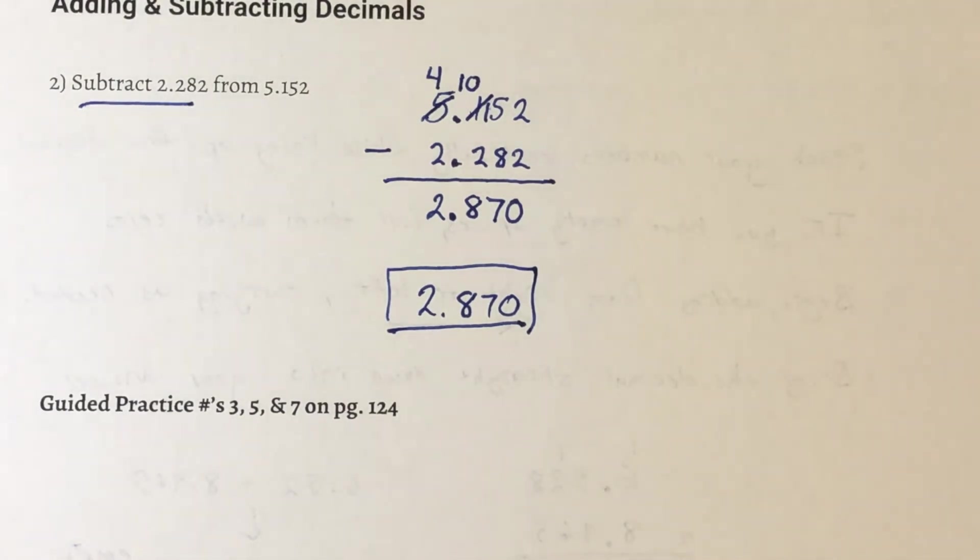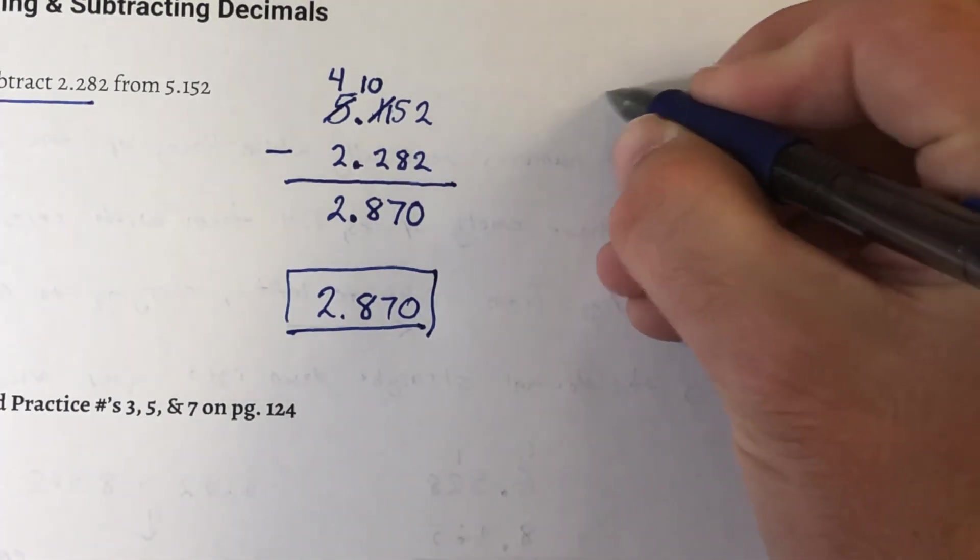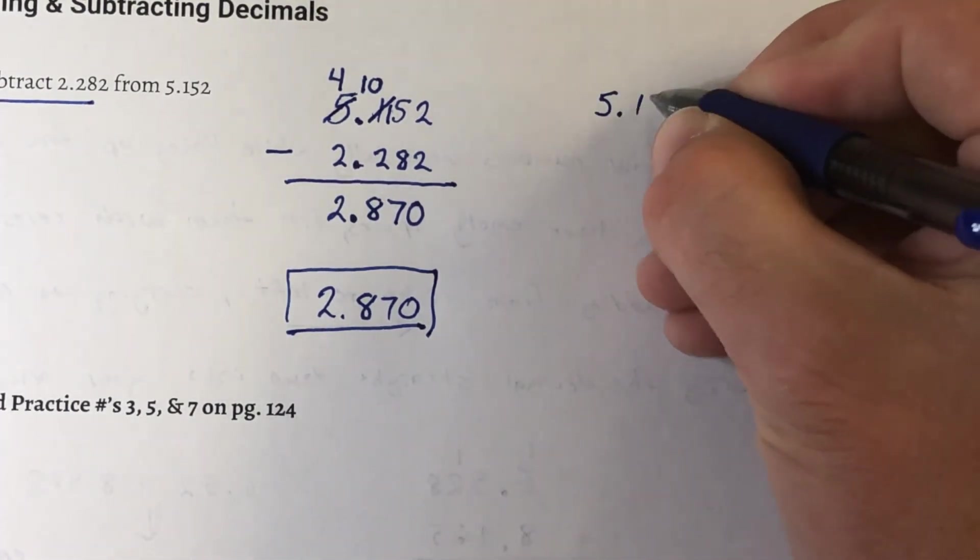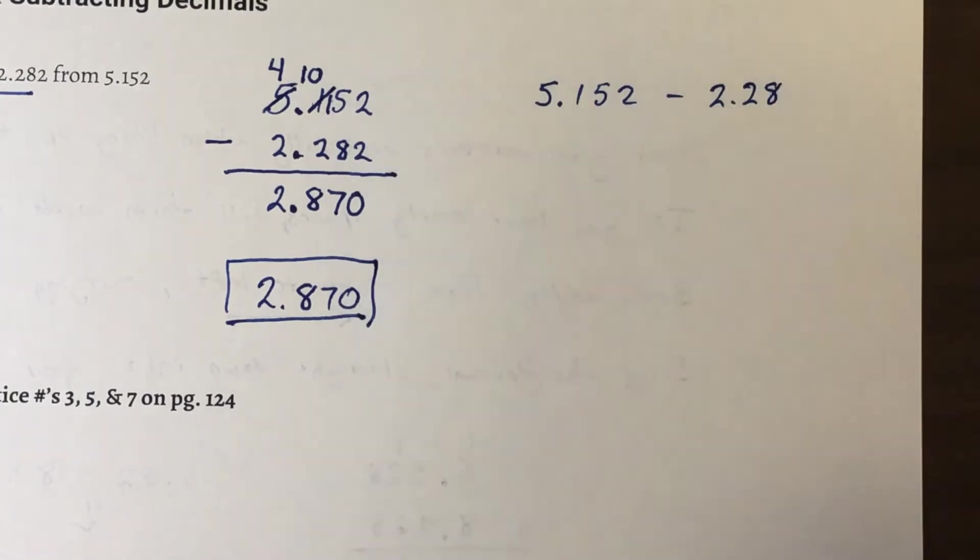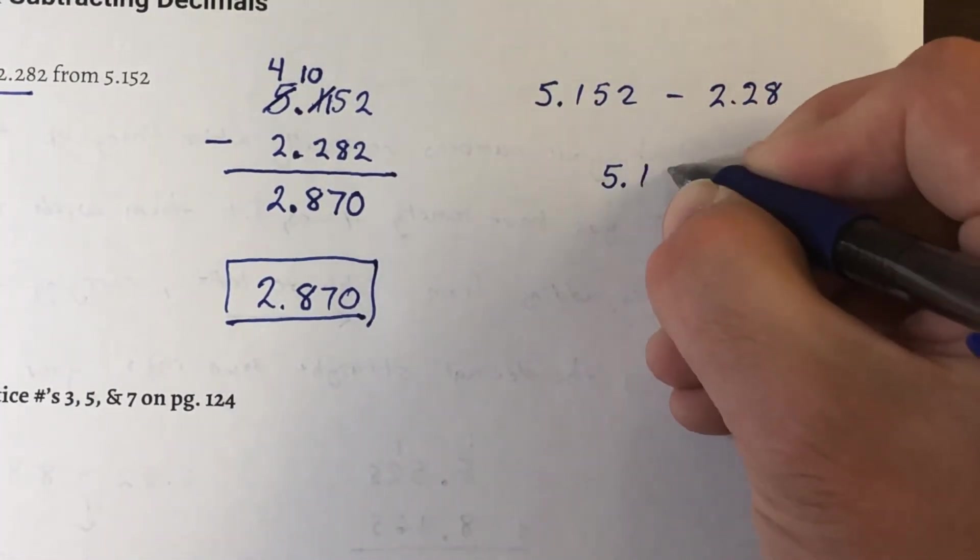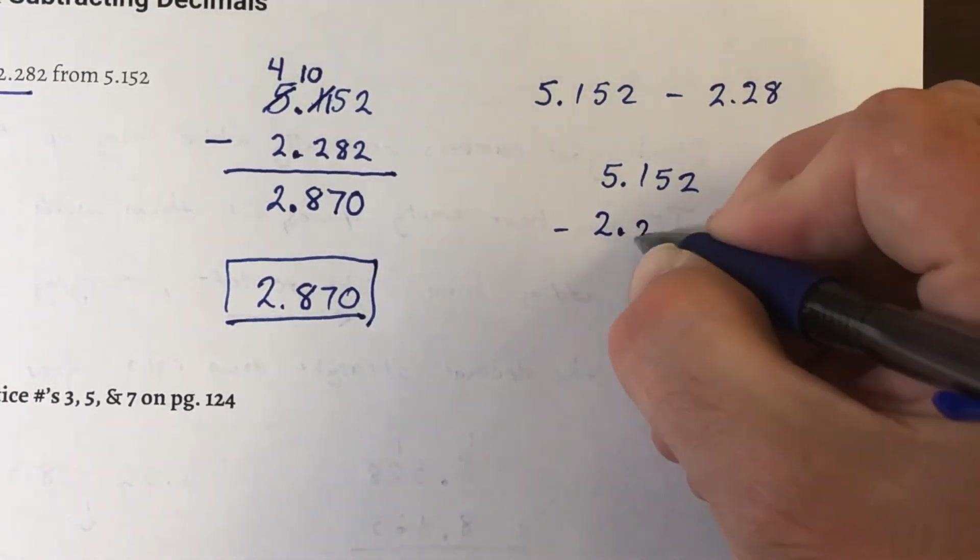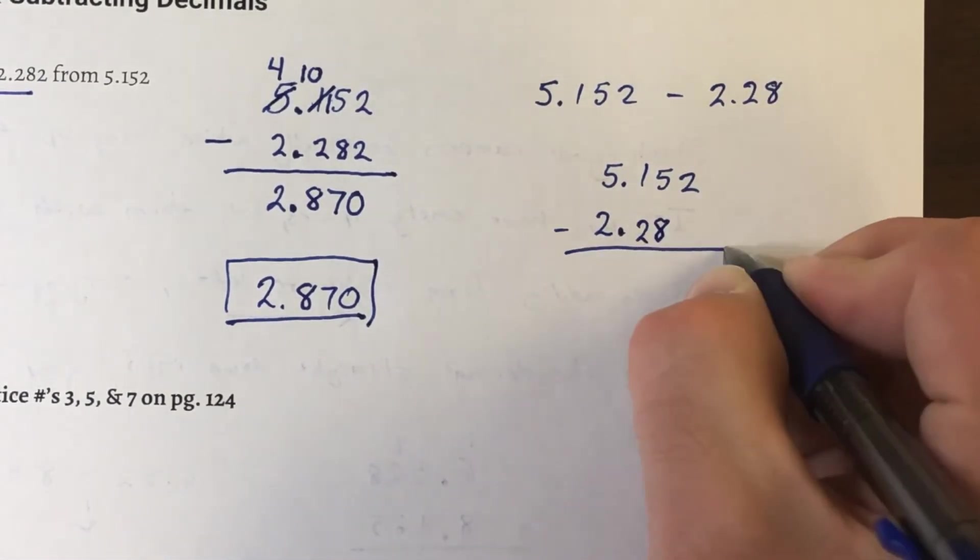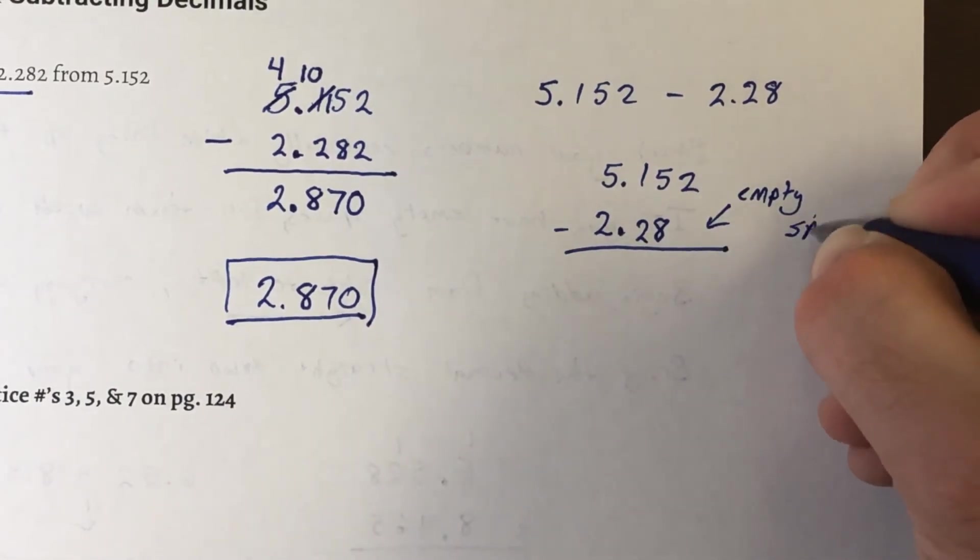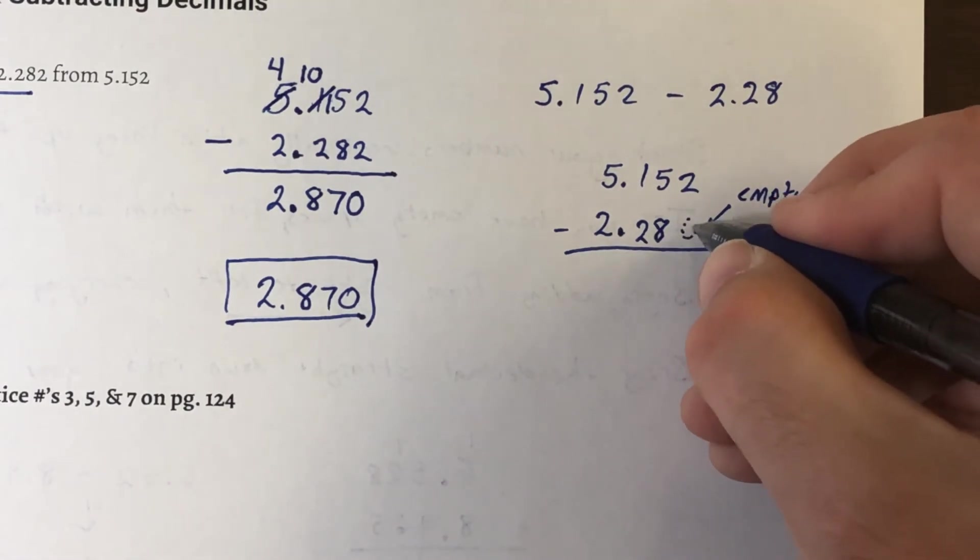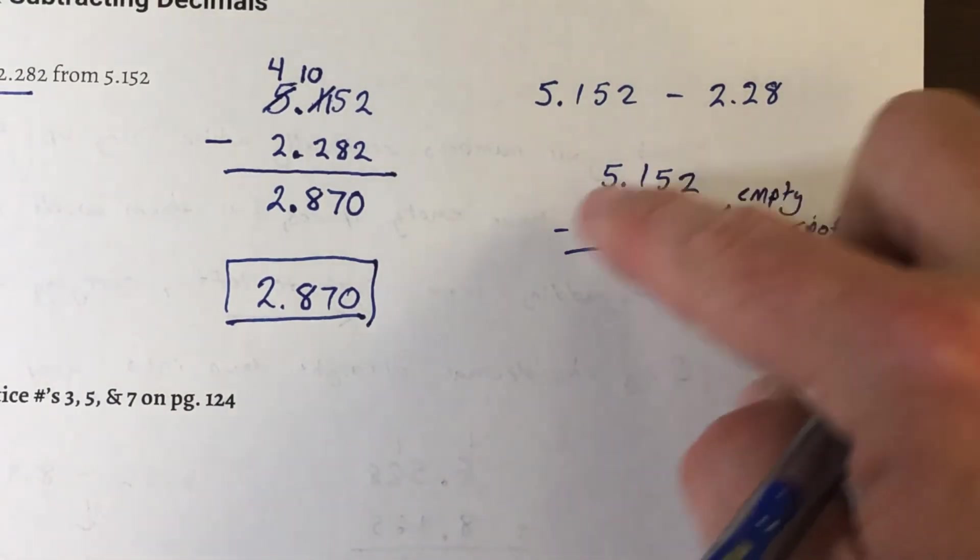Now, what would this problem look like if I had empty spaces? It could potentially look something like this. Let's say I said take 5.152 and you need to subtract 2.28. So first, I would stack them on top of each other. 5.152 minus, I'm going to put my decimal first. So the first 2 under the 5, then the 2 under the 1, the 8 under the 5, and you'll notice I have an empty spot right there. So I would fill that in with a 0. So 2 minus 0 is 0, and then I would start having to borrow.